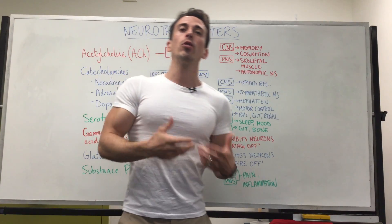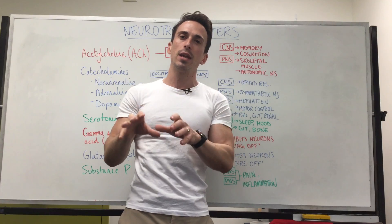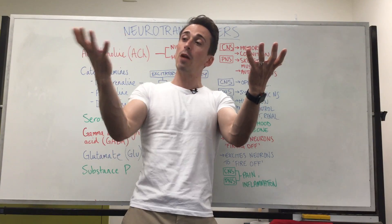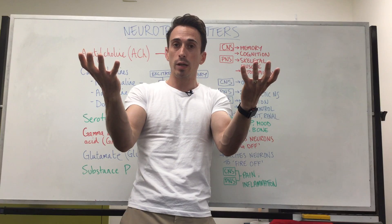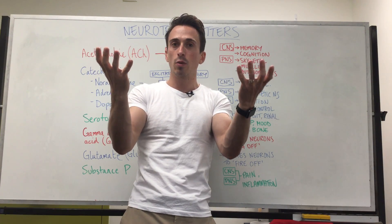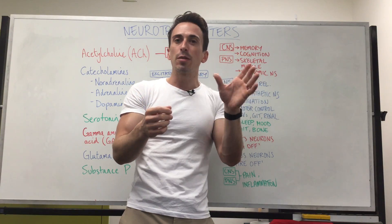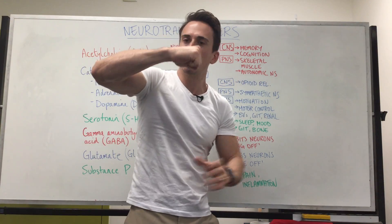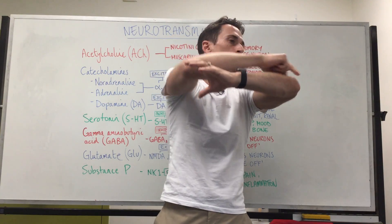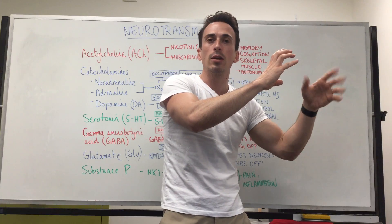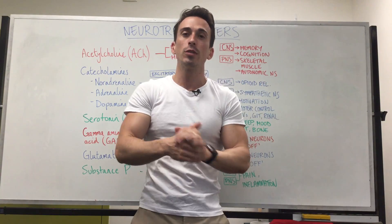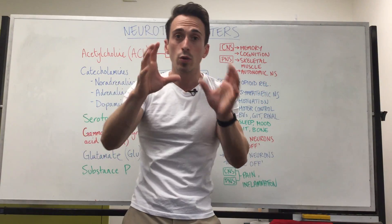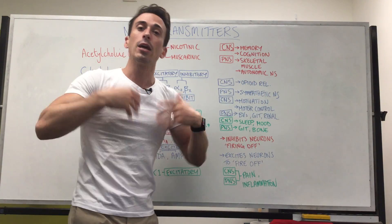Acetylcholine also plays an important role in the autonomic nervous system, specifically the parasympathetic division — the rest and digest. Both the sympathetic (fight or flight) and parasympathetic (rest and digest) divisions use acetylcholine, but the parasympathetic uses acetylcholine at every single neuron, while the sympathetic only uses it from the first neuron. In the parasympathetic, the second neuron sends a signal to the target effector — it could be a muscle, a gland, a cell type. Usually it's the digestive system, the heart, the pupils, or the salivary glands. Acetylcholine is released at every single point, so it's very important in rest and digest.